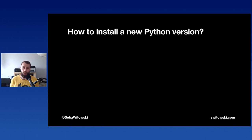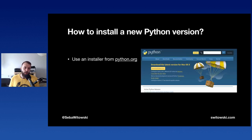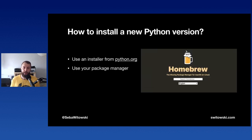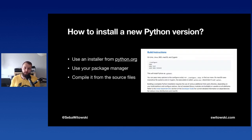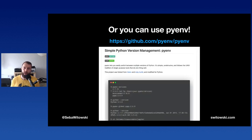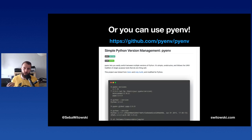No matter what operating system you have, you'll need to install Python, and there are many ways to do it: download from python.org, use a package manager like Homebrew on Mac or apt-get on Linux, or even compile from source. However, my favorite way — which I've been using for years — is a tool called pyenv. pyenv is a tool for managing Python versions; you can use it to easily install new versions and switch between them.